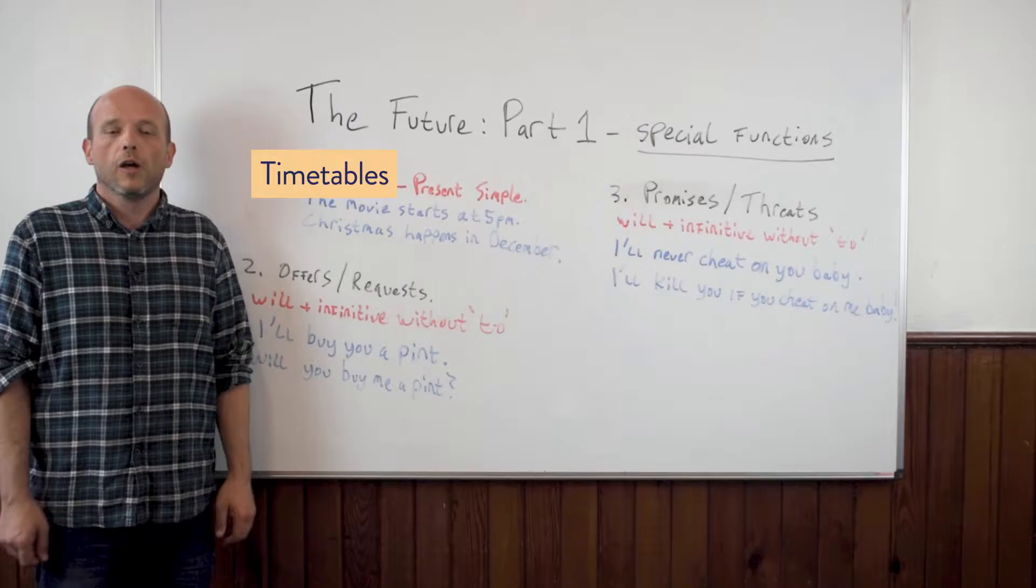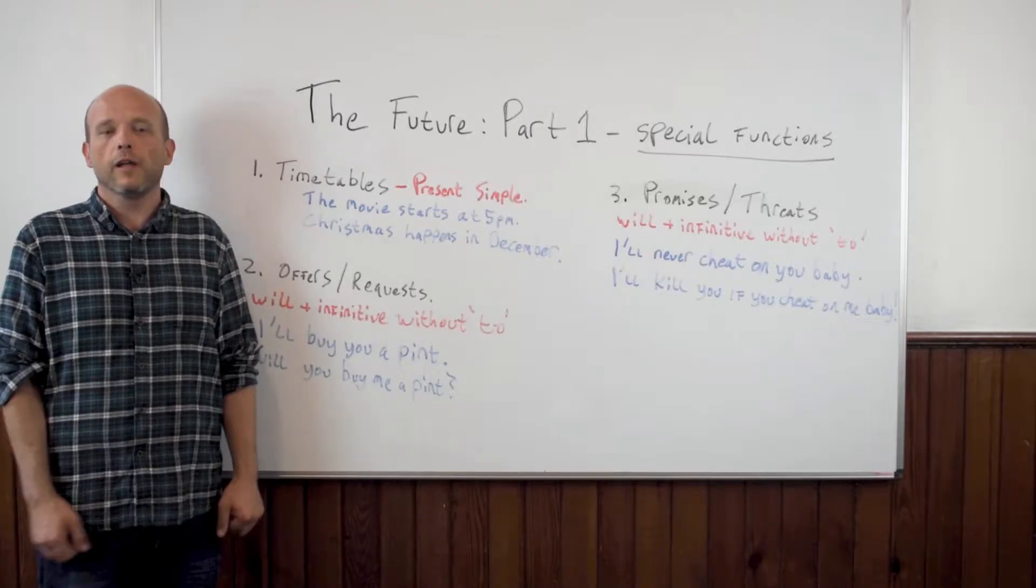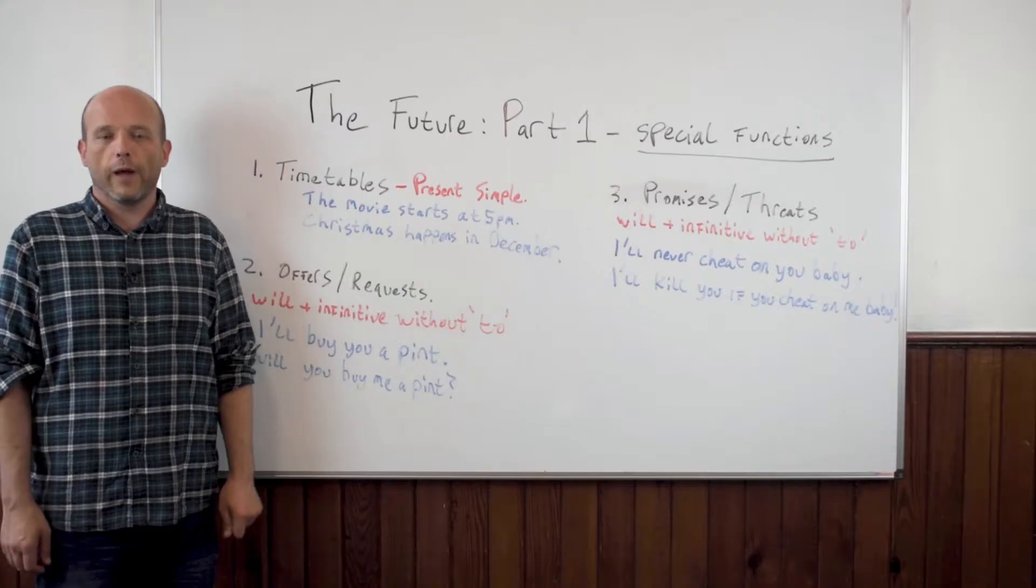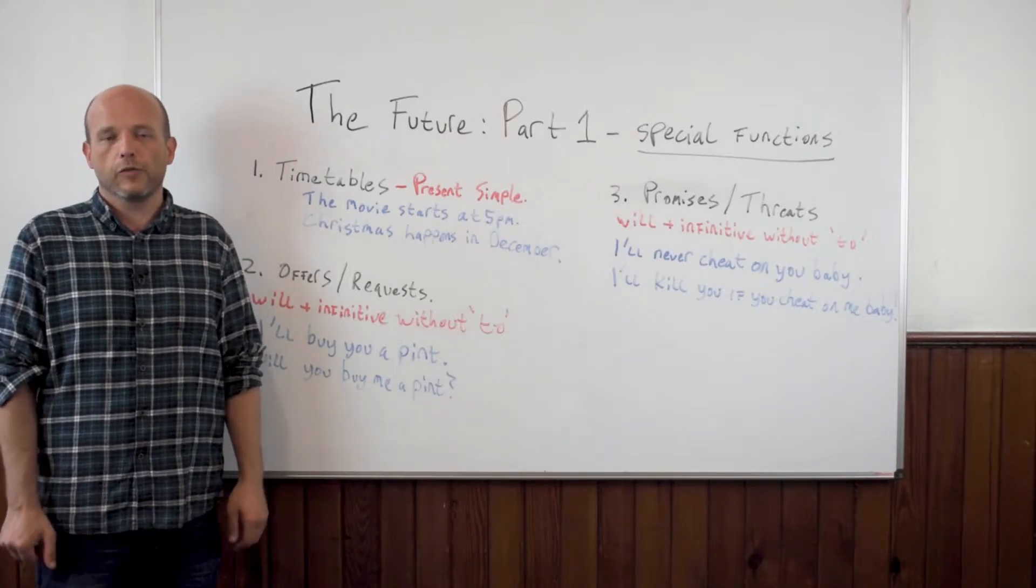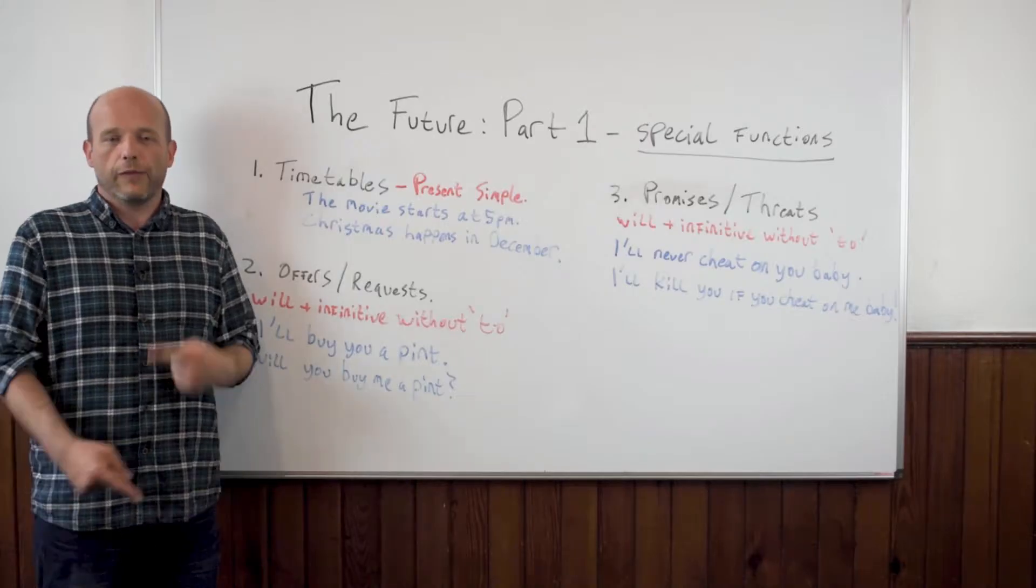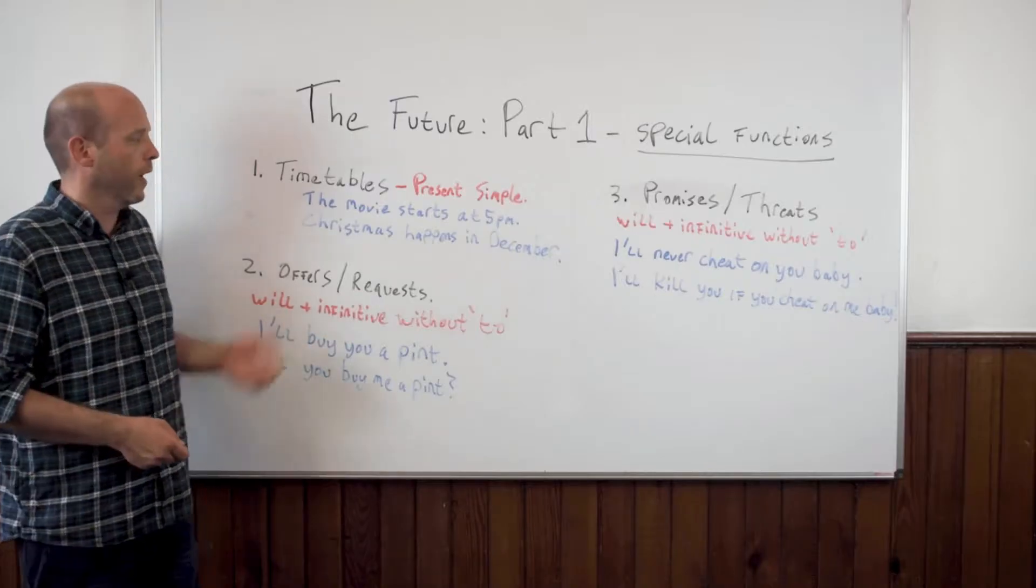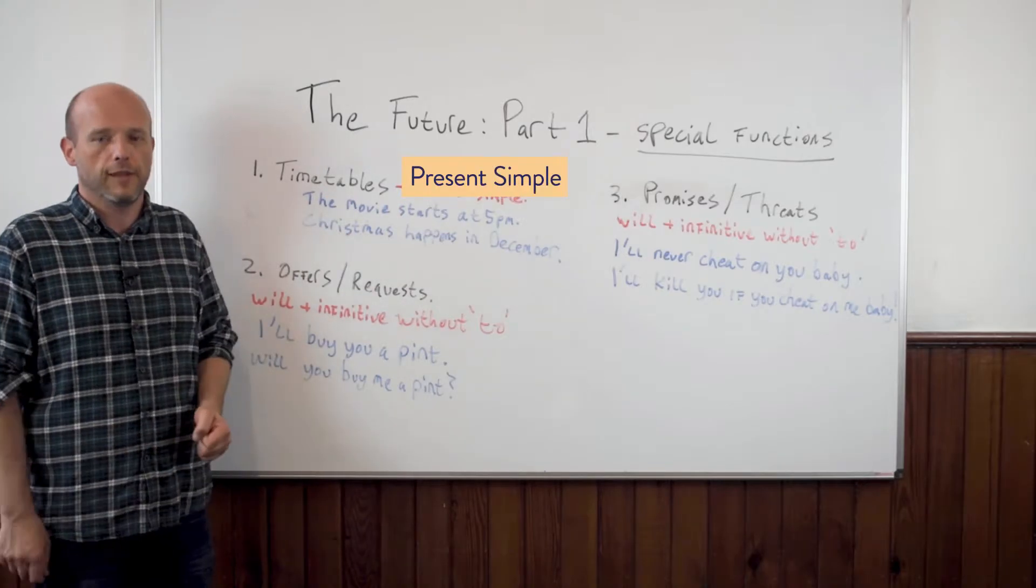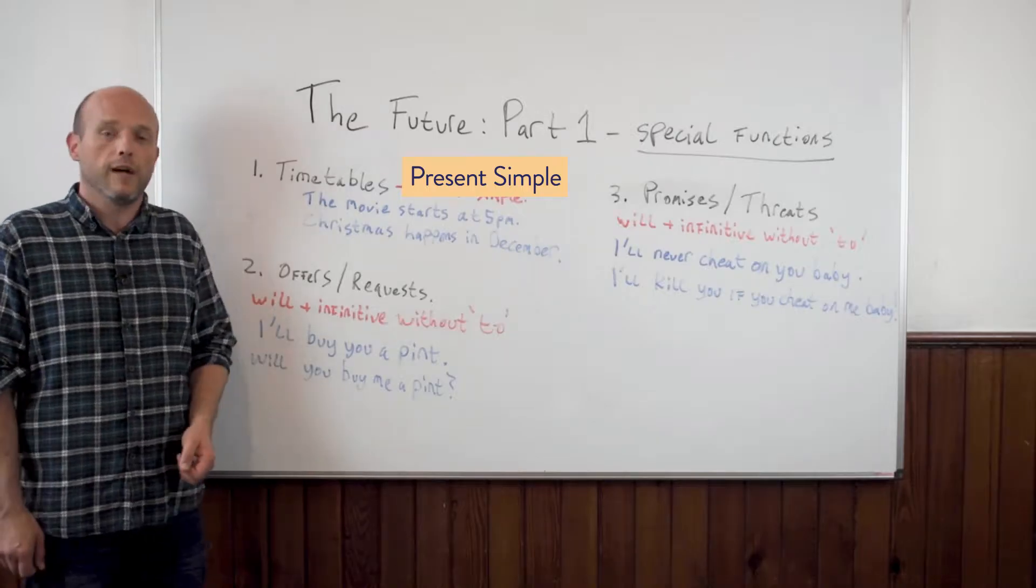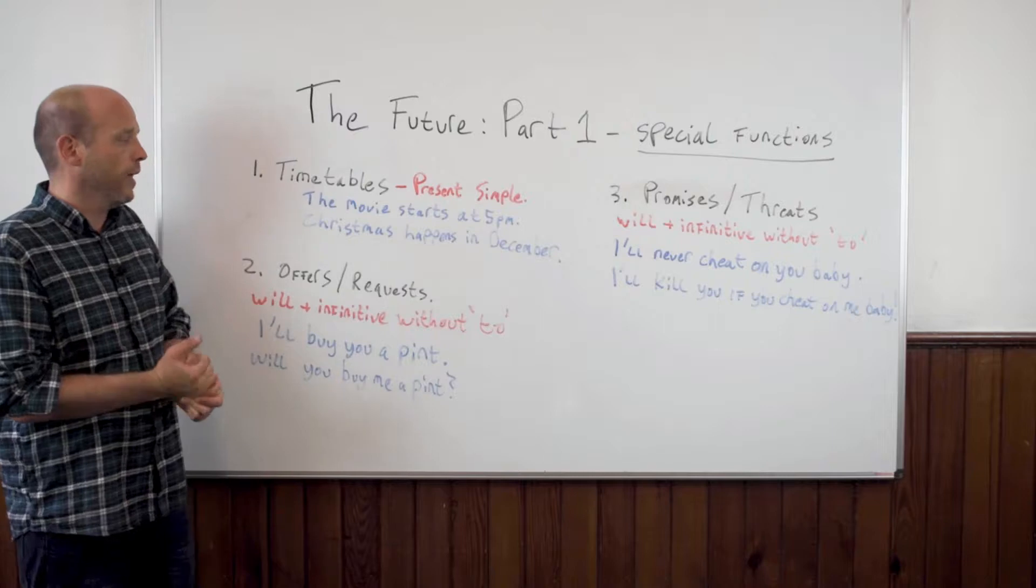Timetables. When we read a timetable and we want to know when the movie is on, when the train leaves, or when the plane arrives at the airport, these are all important to us. They're things which happen regularly or on a timetable or a schedule. And in English, for this, we use the present simple tense. It's the only time we use the present simple to describe the future.